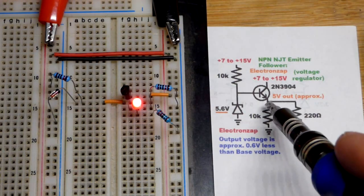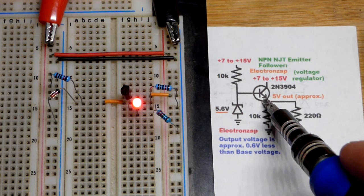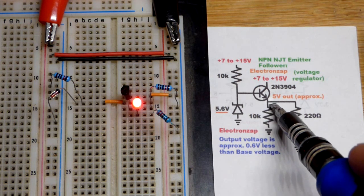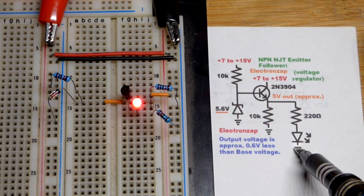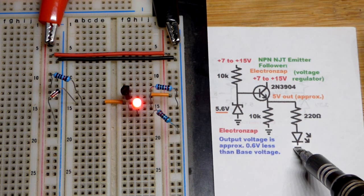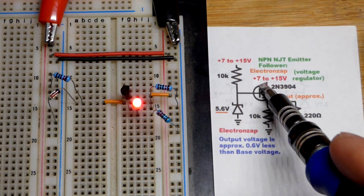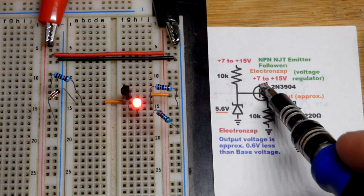So now in this video we have an NPN bipolar junction transistor here wired as a voltage regulator. We're going to maintain a pretty steady voltage across the load here even though the supply voltage will double.